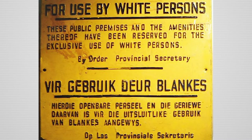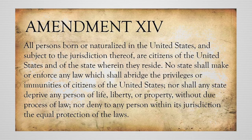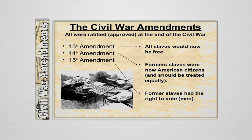In 1866, the Black Codes are passed by all-white legislatures of the former Confederate states. In 1868, the 14th Amendment is ratified, defining citizenship and granting citizenship to all persons born or naturalized in the United States, which included former slaves recently freed. In 1870, the 15th Amendment is ratified, giving African-Americans the right to vote.